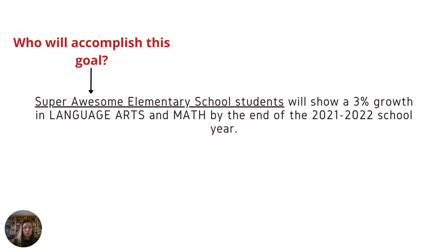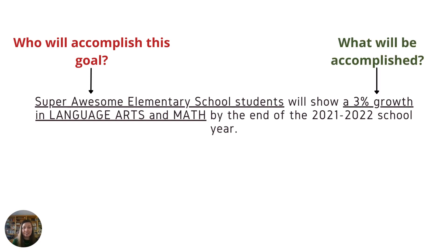Next, you want to indicate what is going to be accomplished. So in this case, it's a 3% growth in language arts and math. And here, it is very clear that this is an academic-centered goal because it is language arts and math.